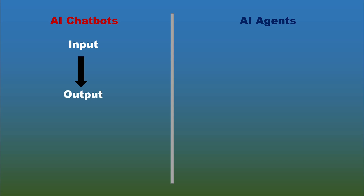Such as, when you ask it to write an article about tigers, it generates a single output, which is an article about tigers.